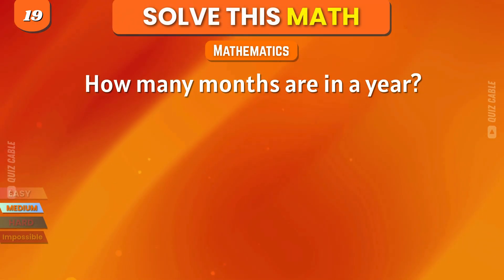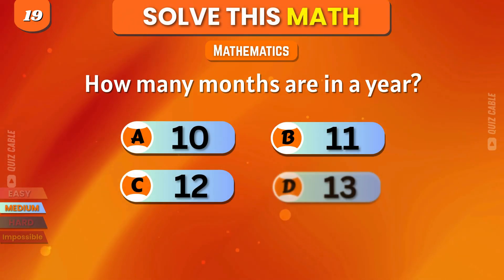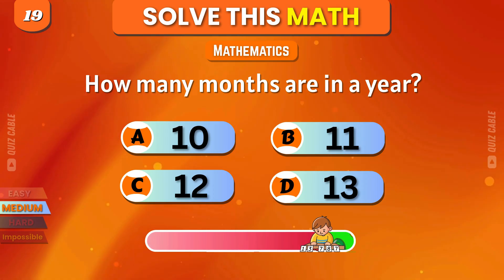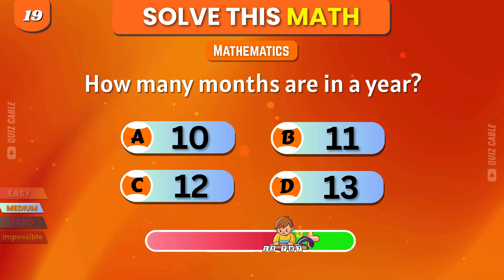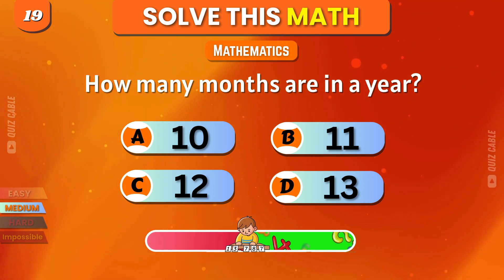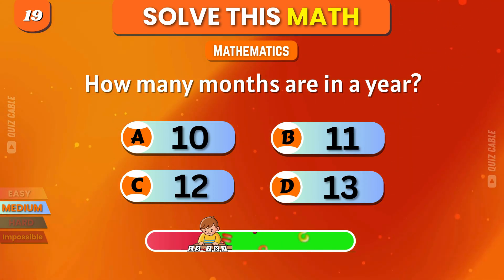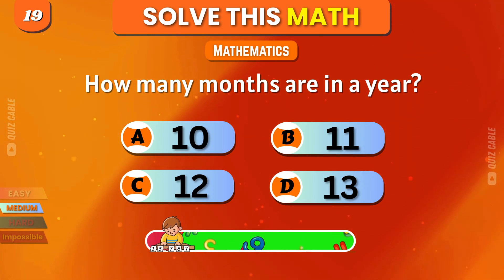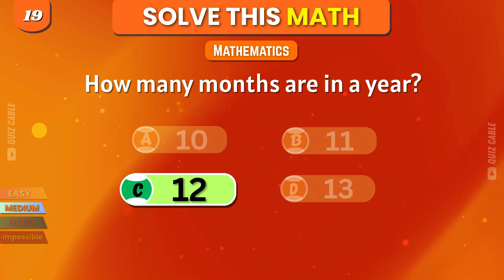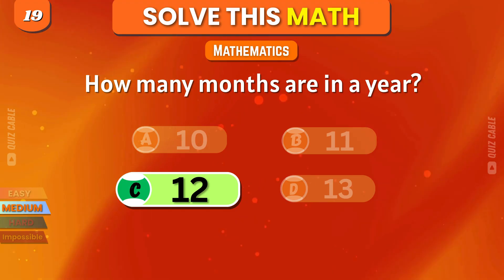How many months are in a year? 10, 11, 12, 13. Correct, 12.